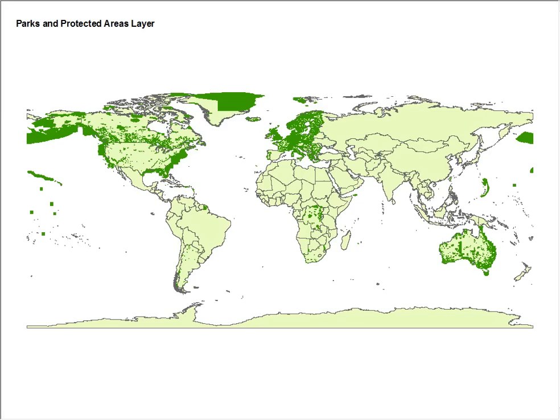One new layer that we have been developing this year is a Parks and Protected Areas layer. This layer currently has over 93,000 polygons.